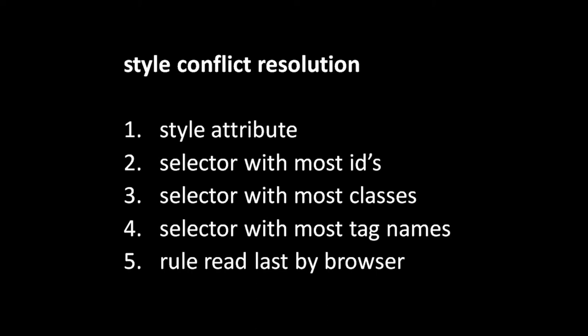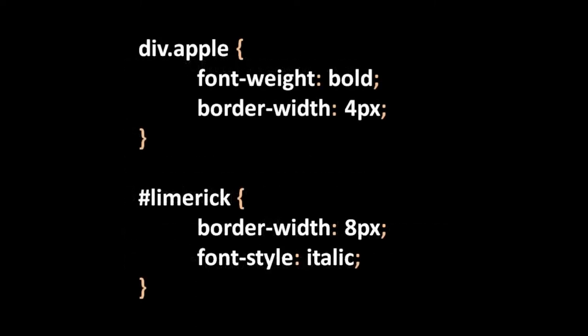Aside from the style attribute, when choosing between different rules, the order of precedence is: the selector with the most IDs takes precedence over the selector with the most classes, which takes precedence over the selector with the most tag names. Finally, if there's a tie, the browser uses whichever rule it read last — so the order in which you write your rules can be significant, though generally you should try to avoid having things come down to a tiebreaker.